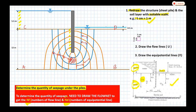The equipotential lines must not exceed the boundary C-D. It can touch boundary C-D in some cases, but it cannot go beyond it. This is the rule for drawing the flow net.